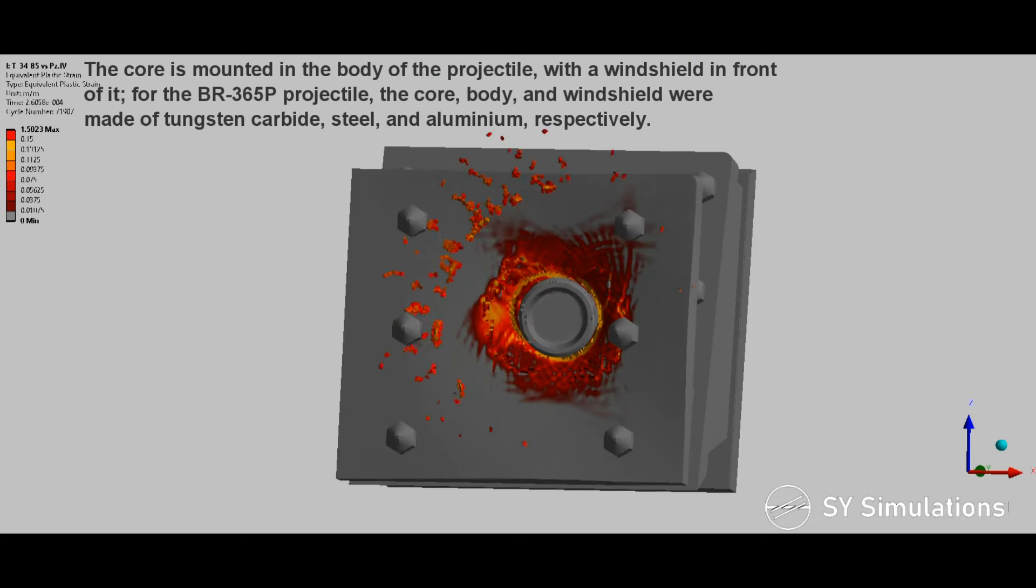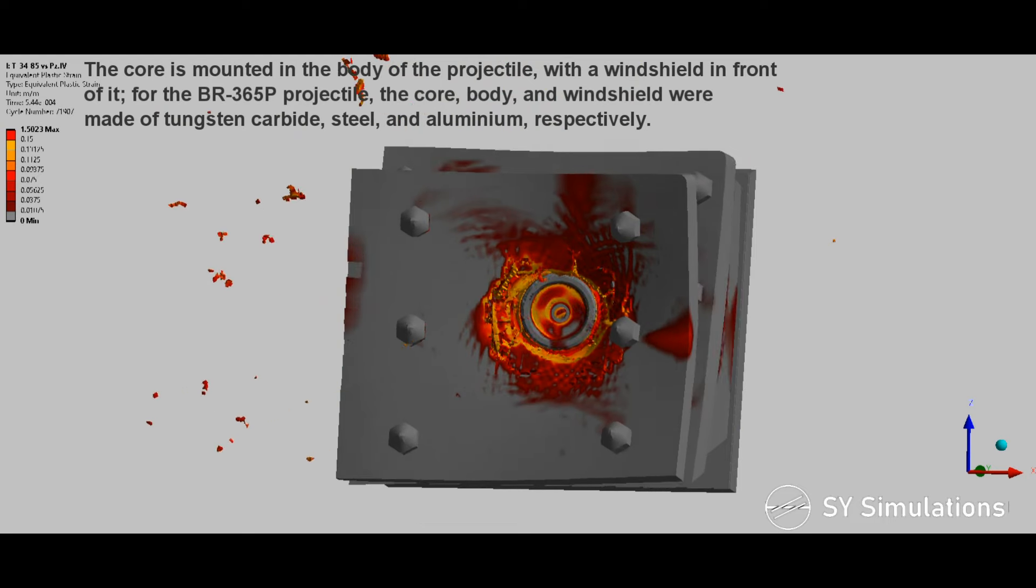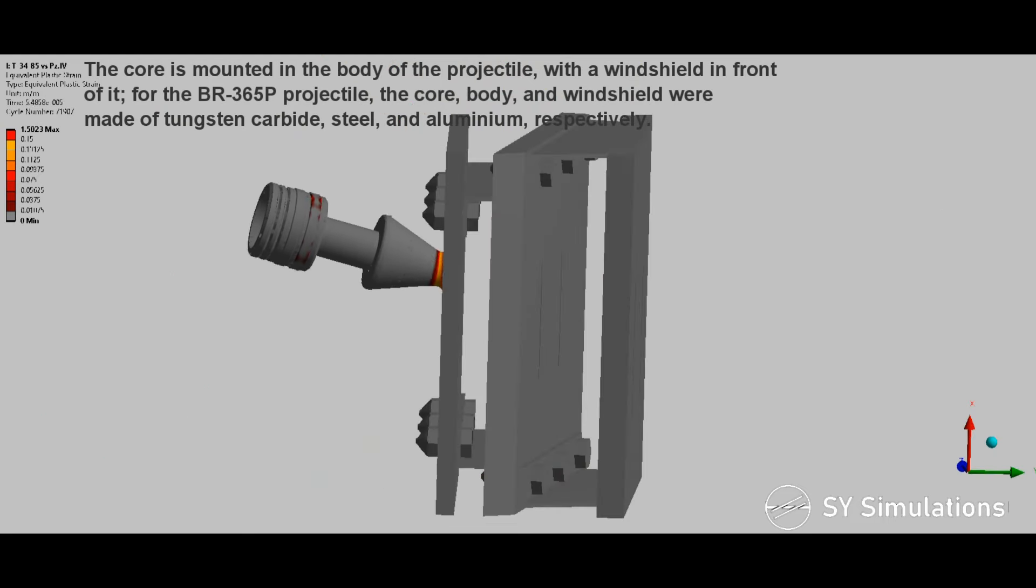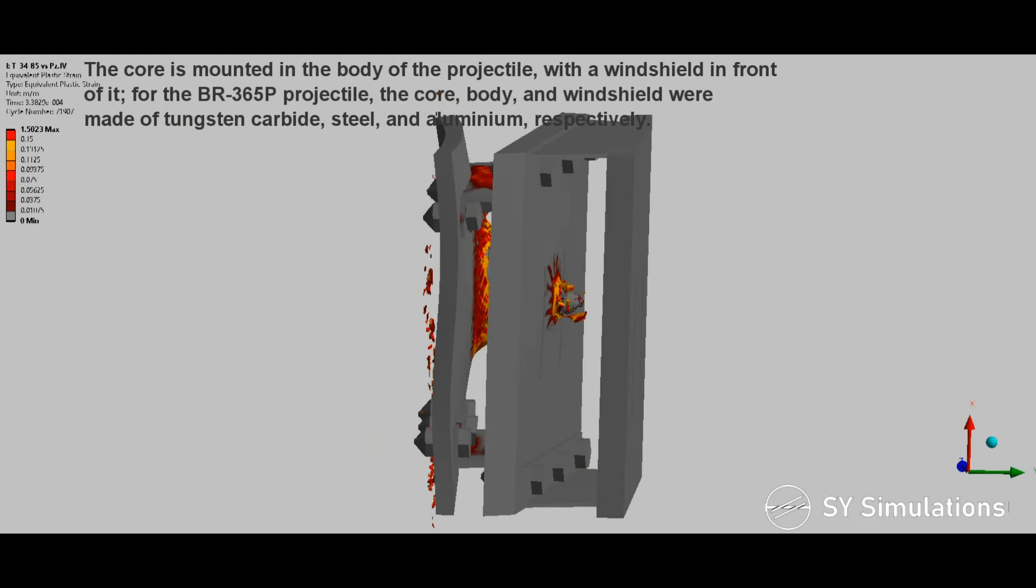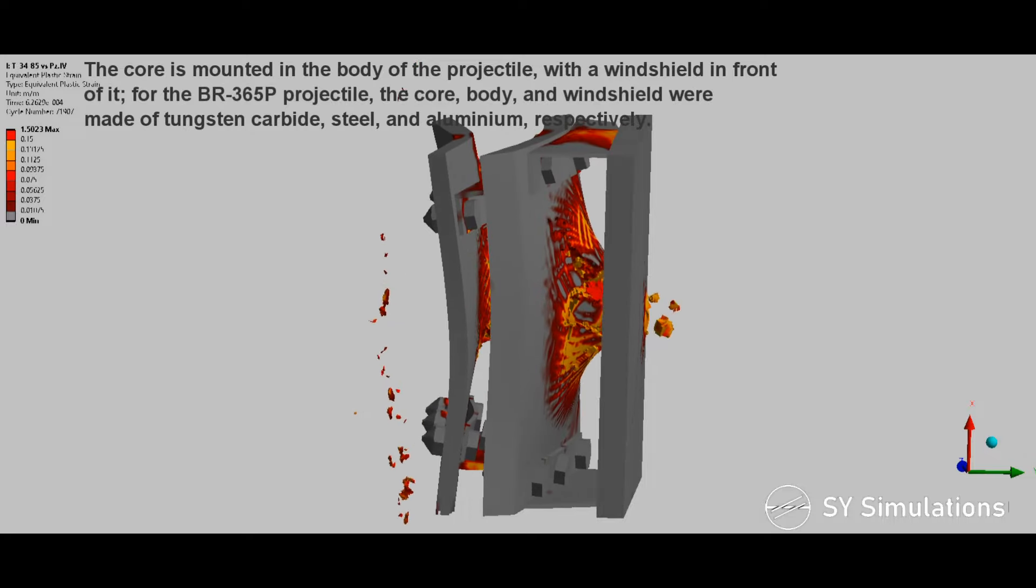The core is mounted in the body of the projectile, with a windshield in front of it. For the BR-365P projectile, the core, body, and windshield were made of tungsten carbide, steel, and aluminum, respectively.